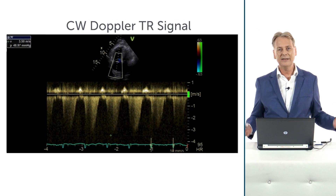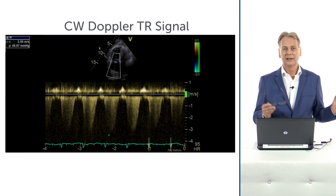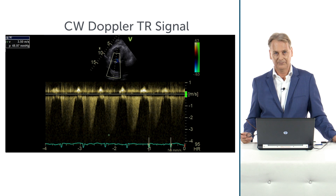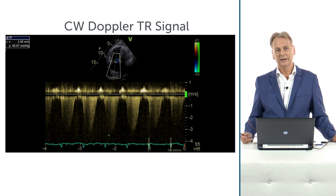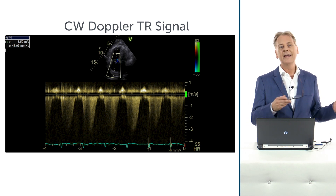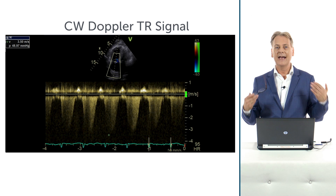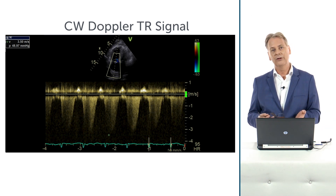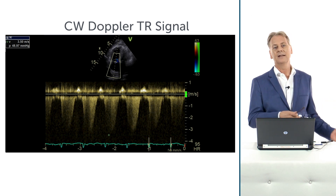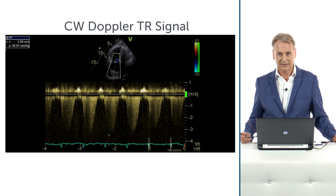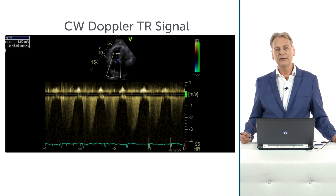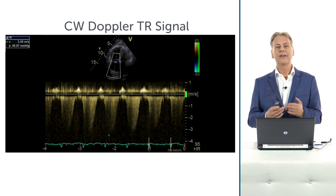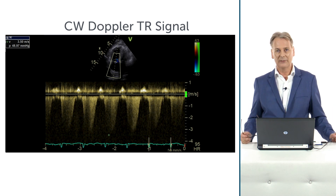How does this all fit together? Clearly this is a patient who has acute pulmonary embolism. In such a situation, patients cannot generate very high pressures, so you will very rarely see high TR velocities. The typical feature of pulmonary embolism is a dilated right ventricle without right ventricular hypertrophy.